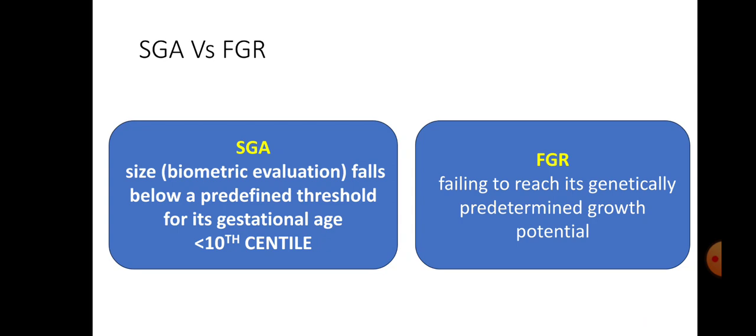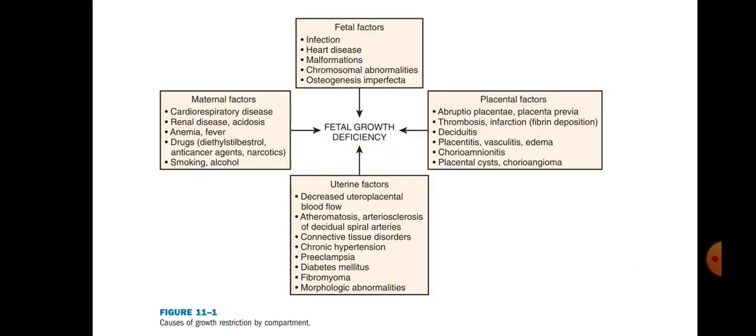Coming to the basic definition and differences between small for gestational age (SGA) and fetal growth restriction (FGR): in SGA, the AC or the estimated fetal weight will be less than the 10th percentile for that specific gestational age — it might be physiological or pathological. Whereas in FGR, the baby has failed to reach its predetermined growth potential, meaning there is some underlying pathology, and hence it is always pathological.